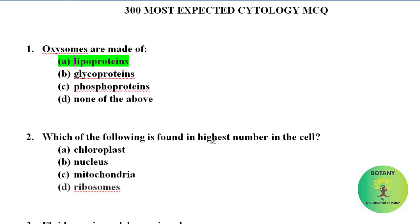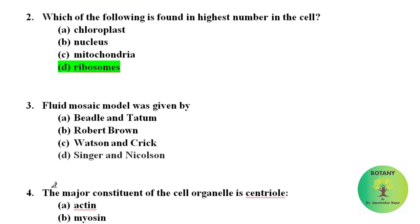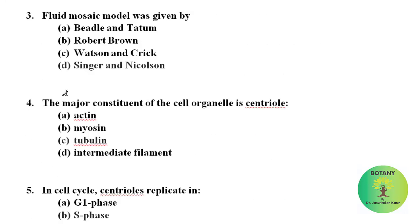Which of the following is found in highest number in the cell? The highest number in the cell, that is the ribosomes. Ribosomes are found freely in the cytoplasm of the cell.